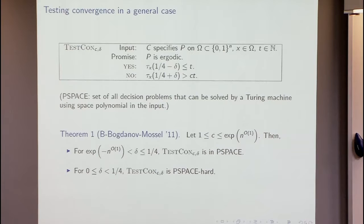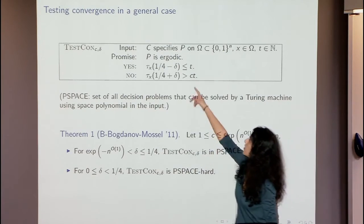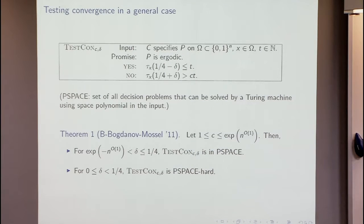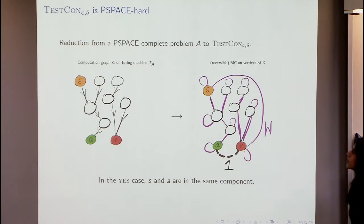When you have an input to your PSPACE-complete problem that is a yes instance, you'd like the mixing time to be small, and when it's a no instance, you'd like the mixing time to be large. Start with some PSPACE-complete problem A and draw the computation graph of the Turing machine T_A which decides it. The Turing machine has a tape, a state at each time, it reads a bit, and the state tells it what to write and whether to move left or right.